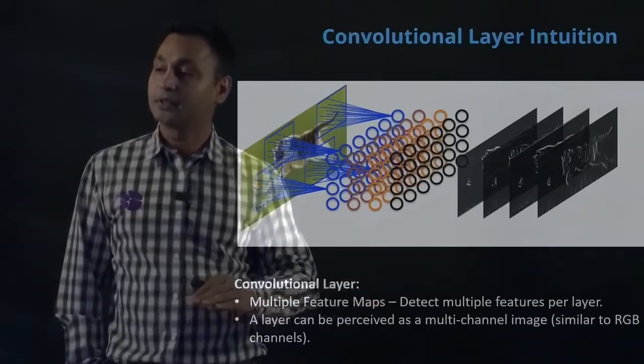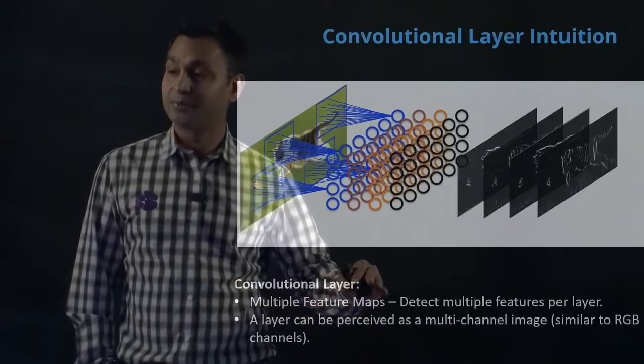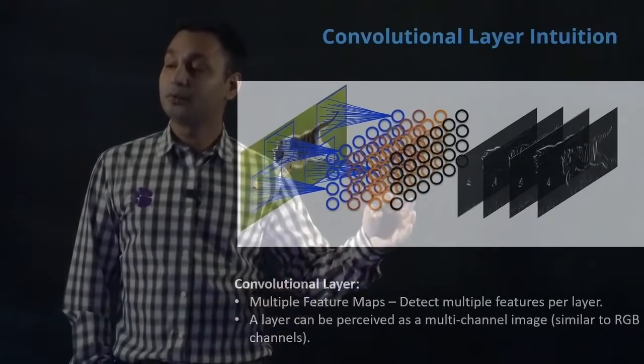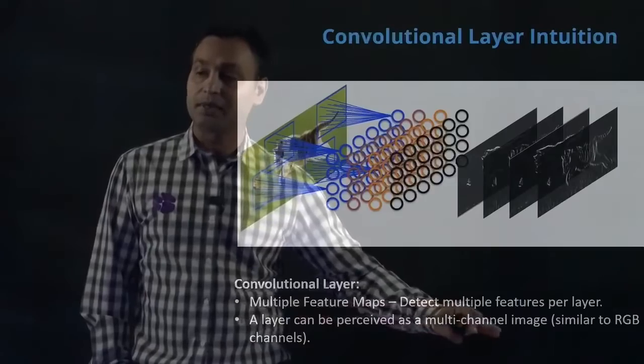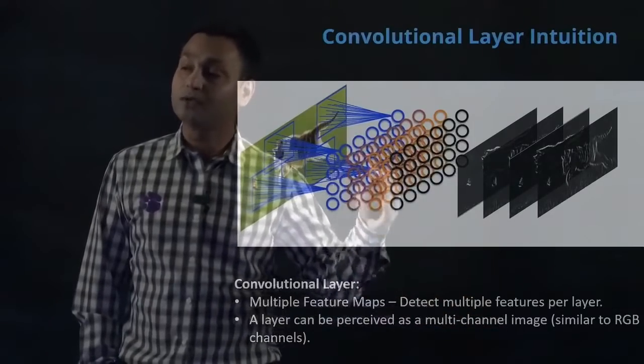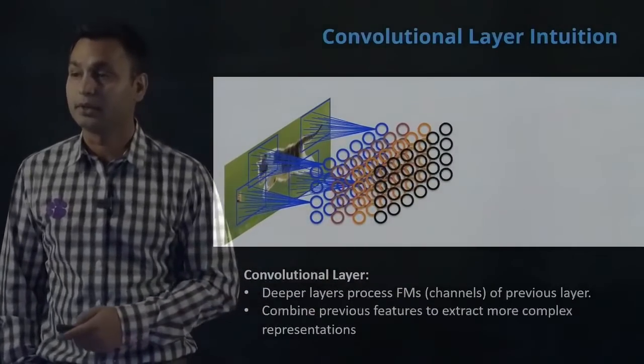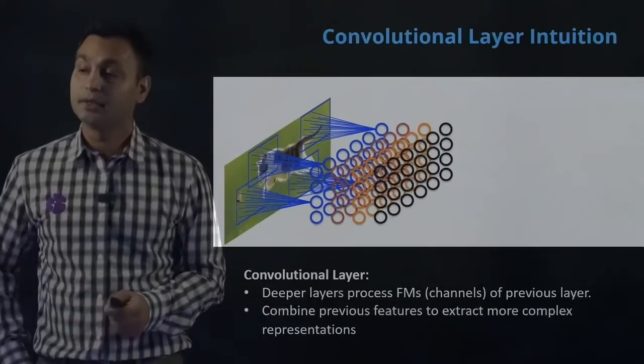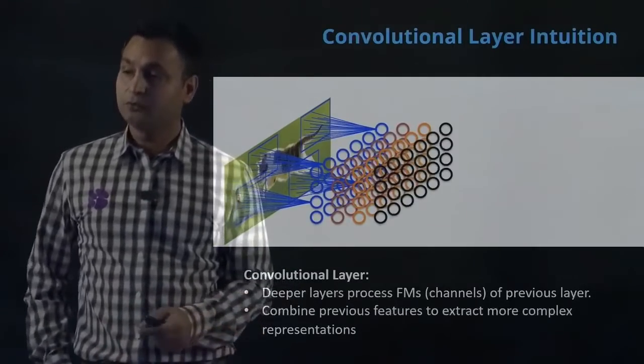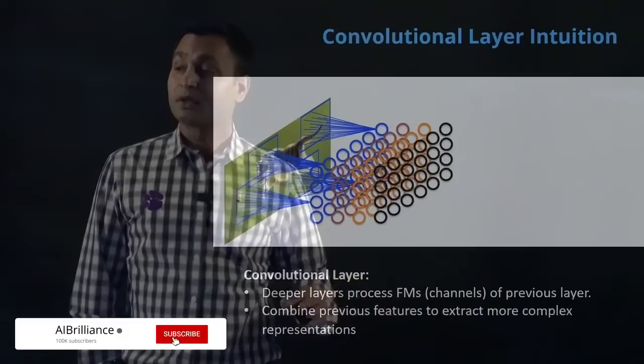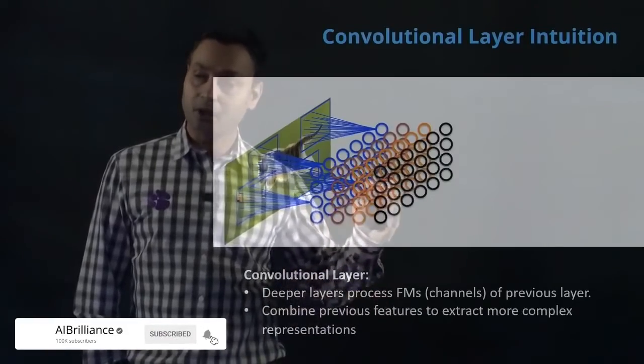That's one intuition. The second critical intuition is that after convolving, we get feature maps. When we do multiple operations of convolution and max pooling, and then again convolution and max pooling, we are combining feature maps.